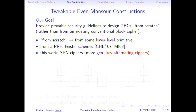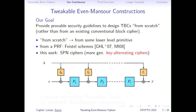What is a key-alternating cipher? It's a simple class of block cipher: to encrypt your plaintext, you first XOR a round key, then apply a public permutation P1, then XOR another round key, apply another public permutation, and so on. The round keys are derived from the master key. For example, AES is designed this way.